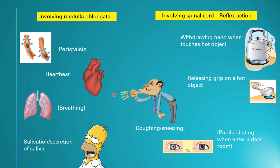To summarize: peristalsis, heartbeat, breathing, and salivation all involve the medulla oblongata and happen continuously. The reflex actions are: withdrawing the hand when touching a hot object, releasing grip on a hot object, coughing or sneezing when dust enters the nose or throat, and pupils dilating when you enter a dark room. Note: the word 'pupil' has two meanings — a student, or the opening in front of the eyeball.